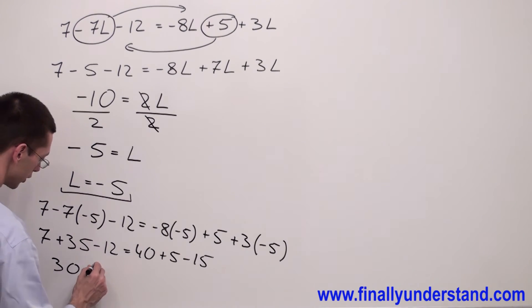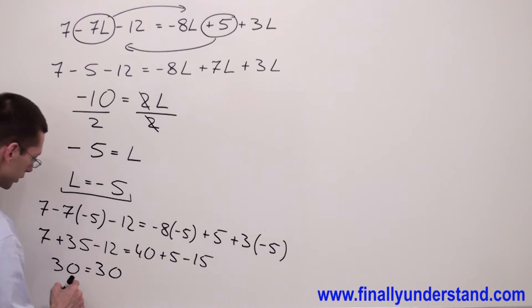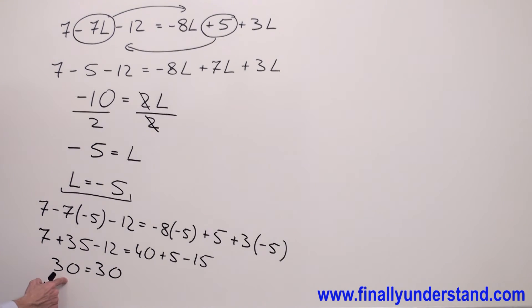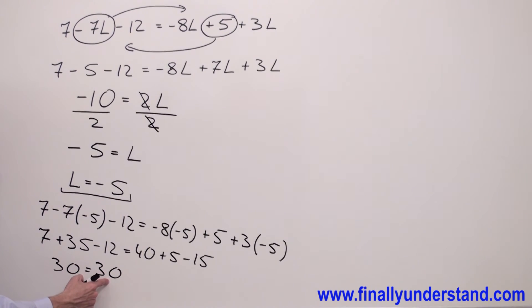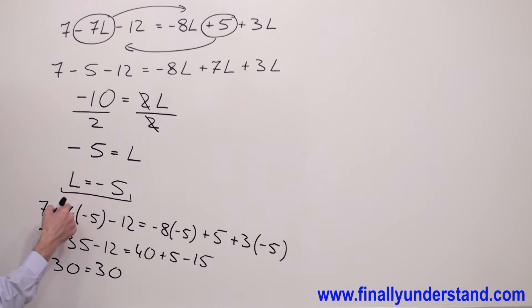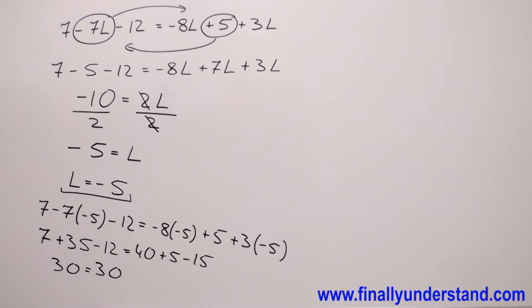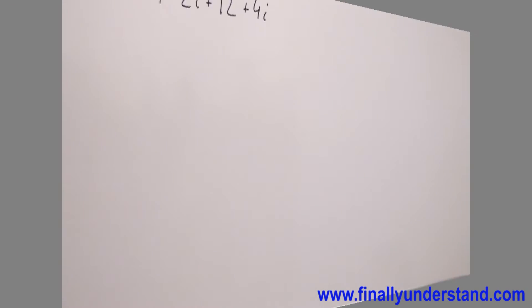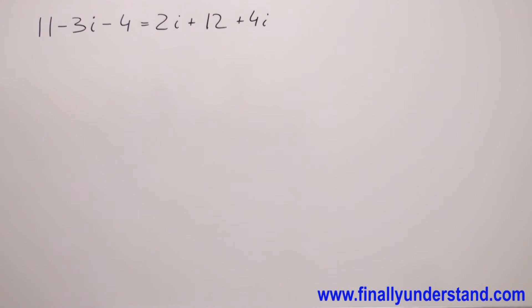As you can see, the left side of my equation equals the right side of my equation. That's why l equals negative 5 is the solution to my problem. Let's take a look at the second example. The second example is very similar to the previous one.